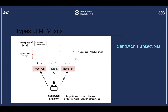What a sandwich attacker does is continuously monitor the mempool and identify a target transaction — assume it's a large purchase of ETH on a DEX. This will definitely cause a surge in price. The attacker places a transaction involving a larger buy than the target's transaction before the target transaction — that's called front-running. You ensure your transaction is arranged first in the block by paying higher gas fees to the validator.